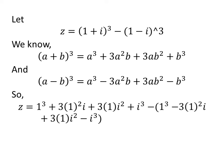Applying the above identities gives us: Z is equal to cube of 1 plus 3 times square of 1 times i plus 3 times 1 times square of i plus cube of i, minus in brackets: cube of 1 minus 3 times square of 1 times i plus 3 times 1 times square of i minus cube of i.